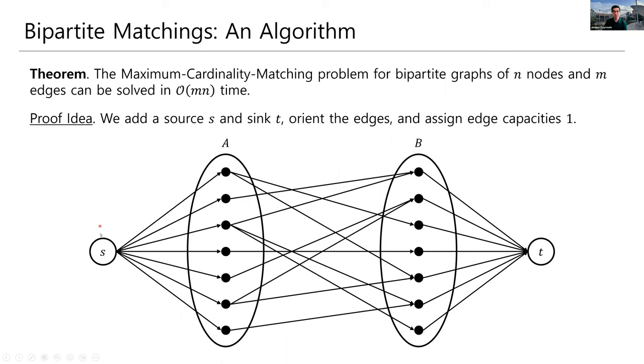First, we're going to add a source node, S, and we're going to add new edges from S to every node in A. And, specifically, this is going to be a directed graph. So, we direct all edges from S to the nodes in A. Then, we change the undirected edges between A and B to be directed, where everything goes from A to B. So, you see the arrows are pointing in that direction. And, finally, we add a sync T, and we add new edges from each node in B to T, directed from B to T.